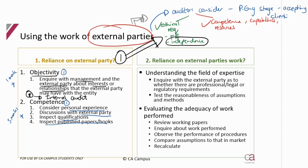Only once objectivity and competence are both confirmed do we move to step two: can I rely on their work, and how do I go about doing that? I first need to see if they have any professional or regulatory requirements they need to adhere to. Then I need to look at their working papers, recalculate the things they've done, test any assumptions by comparing them to market assumptions, review those working papers in detail, and cross-check everything to supporting documents. If I'm comfortable with that, we will use their work.